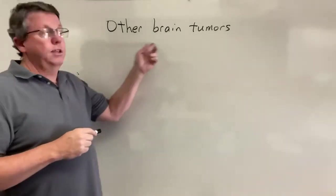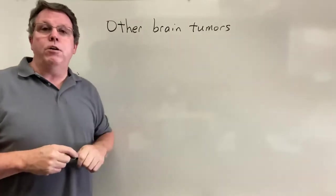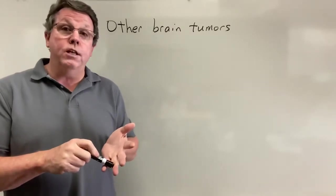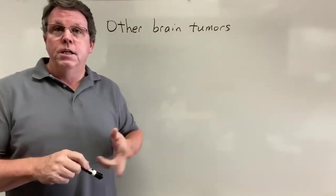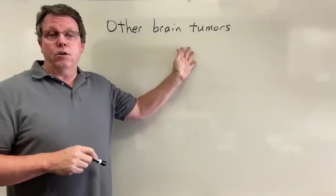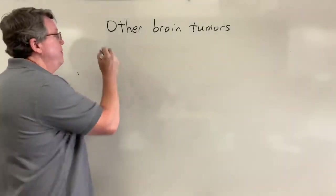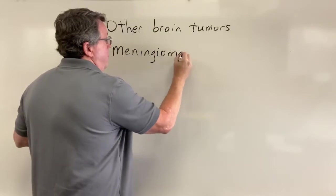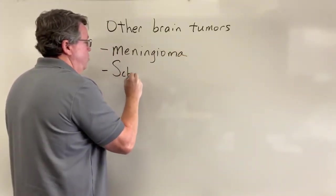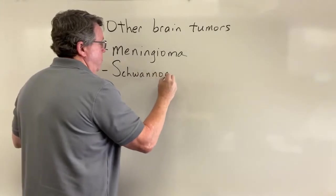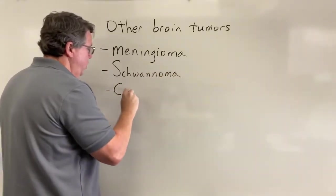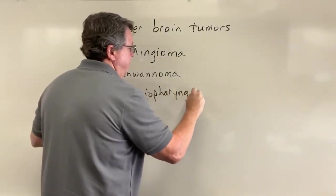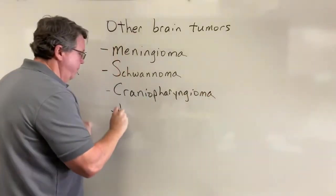In this video we're going to be talking about other brain tumors. We've already talked about the primary brain tumors — astrocytomas, oligodendrogliomas, and ependymomas. There are basically four more types we're going to cover: meningioma, schwannomas, craniopharyngioma, and then we're going to be talking about pineal gland tumors.